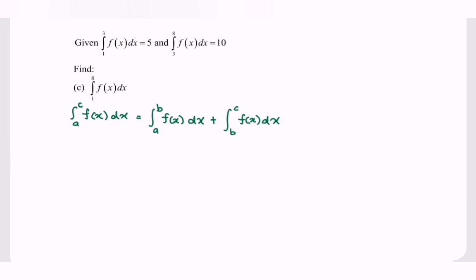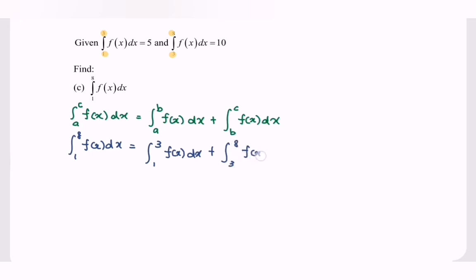Making use of this, for our case: integrate f(x) from 1 to 8. We can split the integral by referring to the given information, using 1 to 3 and 3 to 8. So this equals the integral of f(x) from 1 to 3 plus the integral of f(x) from 3 to 8. Referring to the given information, the integral from 1 to 3 equals 5 and from 3 to 8 equals 10. Summing these up, the integral of f(x) from 1 to 8 equals 15.